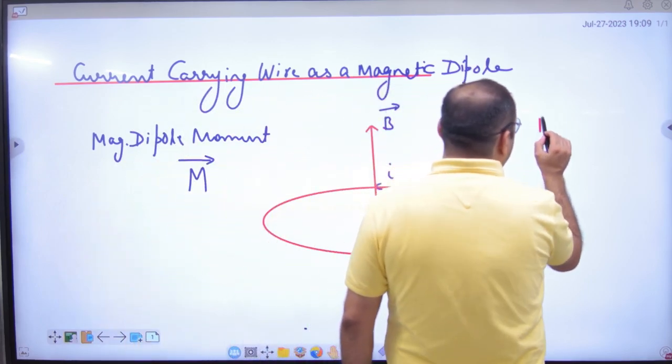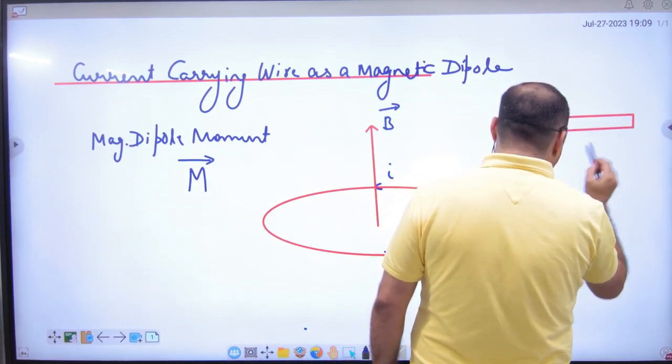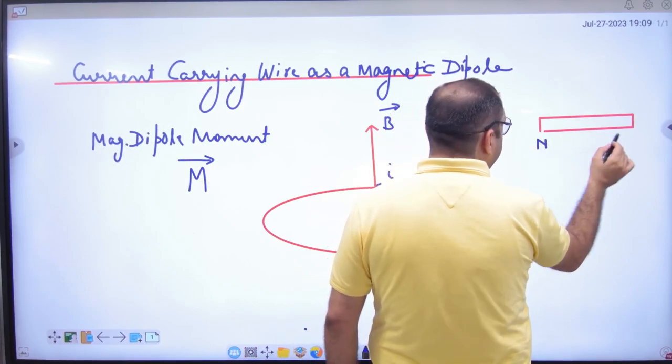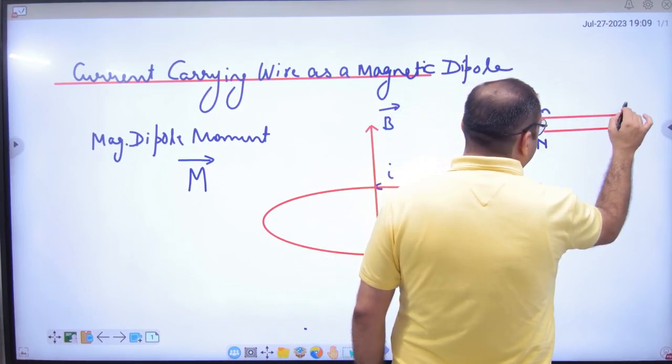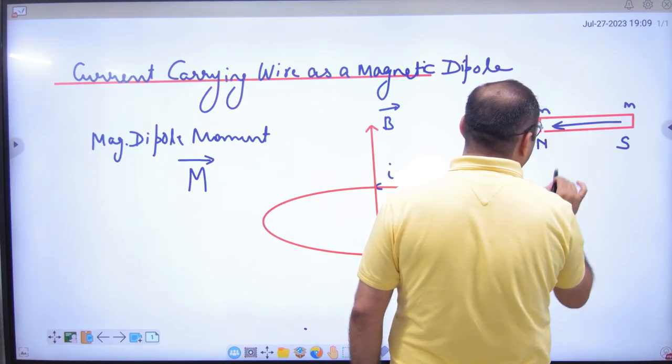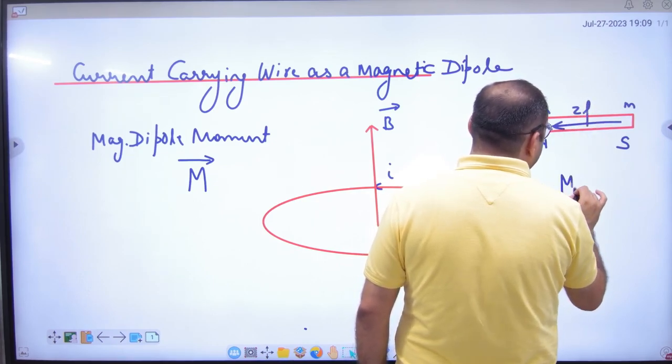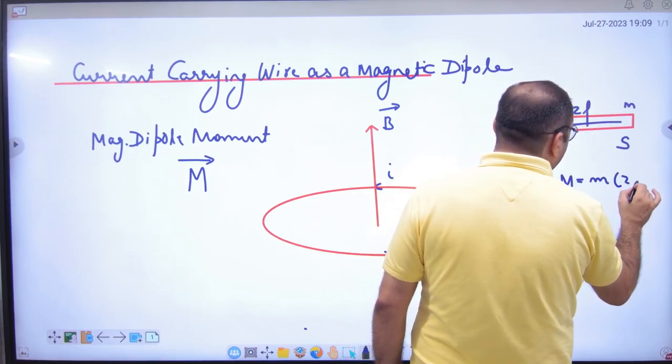We considered the dipole moment in the bar magnet: this is north, this is south, this is pole strength, and this will be 2L. The formula is M = m × 2L.